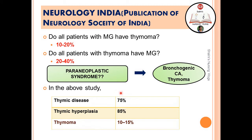Another finding of the study: 75 percent of patients with myasthenia gravis had some kind of thymic disease, of which 85 percent had thymic hyperplasia and 10 to 15 percent had thymoma.